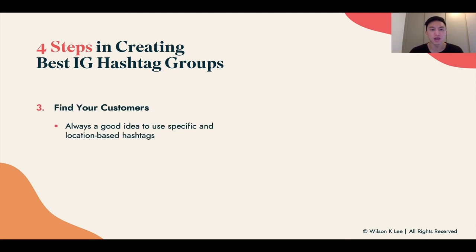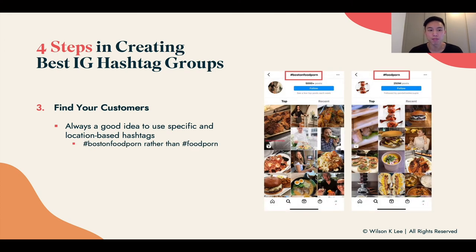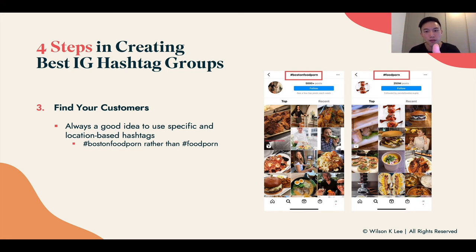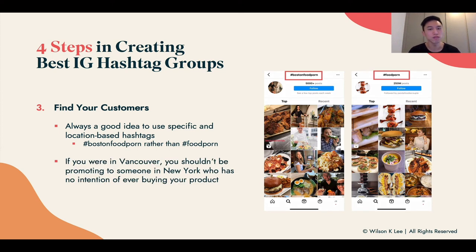Next, find your customer — it's always a good idea to use specific, location-based hashtags even though the search volume is lower. When you use a hashtag like Boston food point instead of just food point, you go from 250 million posts down to only 5,000 posts, and that's actually a good thing. More chances of your posts getting found by people searching for that hashtag. If you're in Vancouver, you shouldn't be promoting to someone in New York who has no intention of — or can't — buy your product. It just makes no sense.